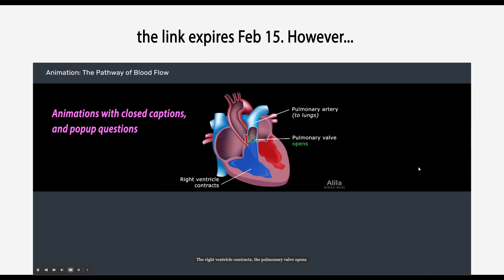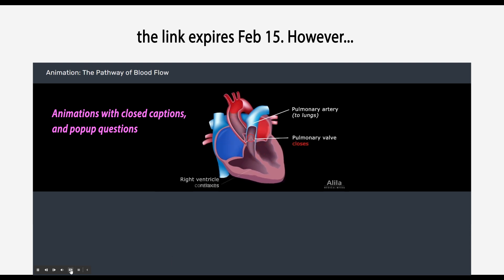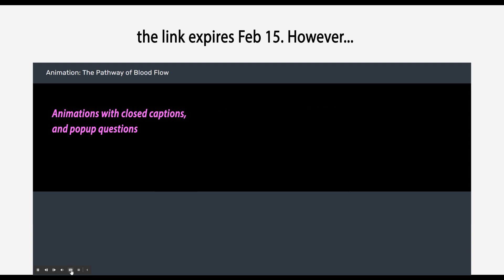The right ventricle contracts. The pulmonary valve opens, and blood is pumped into the pulmonary artery and to the lungs. The pulmonary valve closes to prevent blood from flowing back into the ventricle.